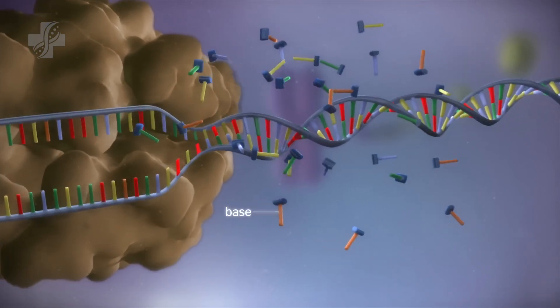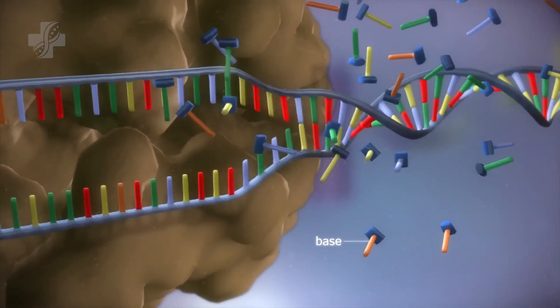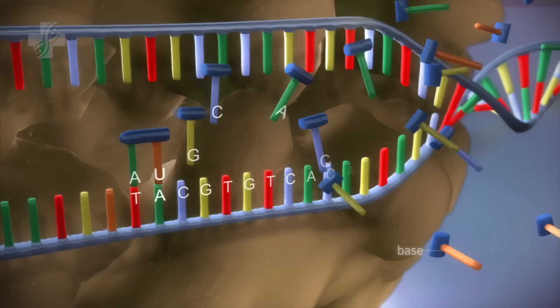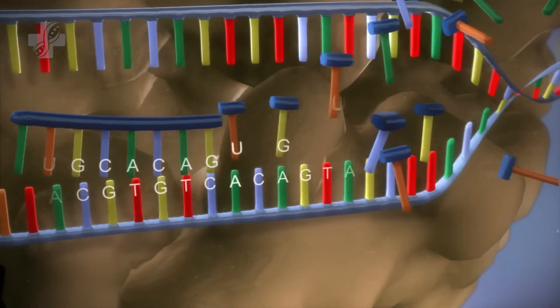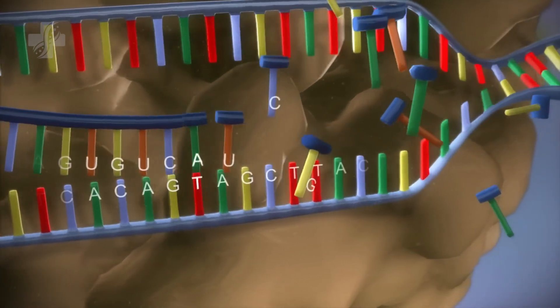The double helix strand of DNA is then separated, allowing free bases in the nucleus to form a single strand copy called messenger RNA.